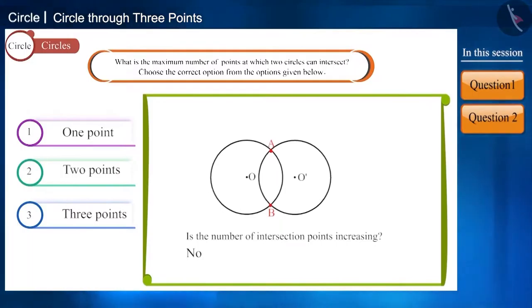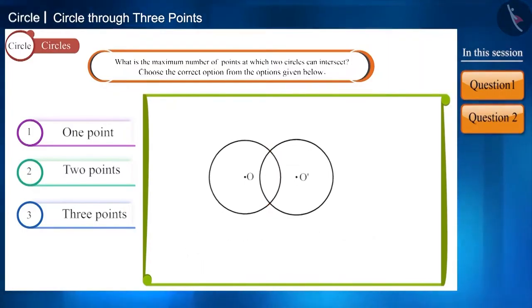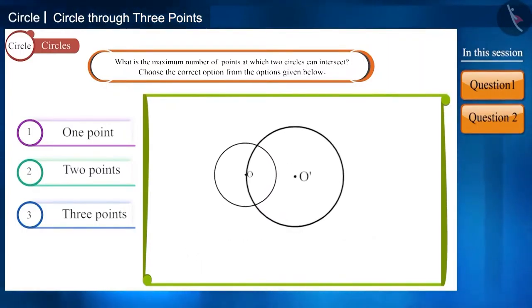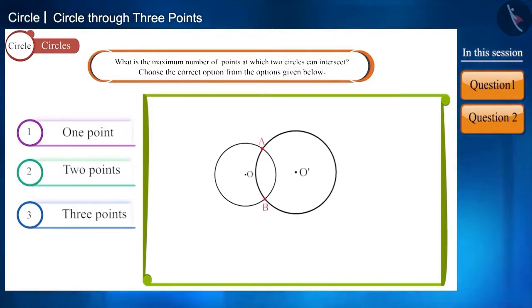Is the number of intersection points increasing? No. Even now, the number of points of intersection is only two. You can see that whether we keep the size of the circles big or small, they will intersect at only two points.